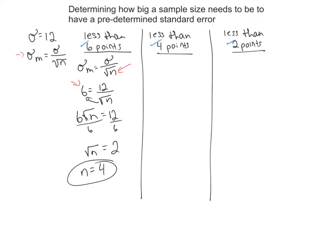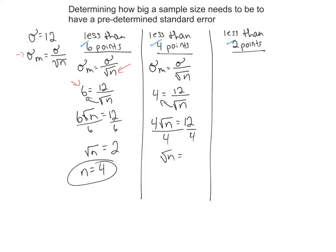Let's say we want an even smaller standard error. Same equation: standard error equals standard deviation divided by the square root of n. This time we want our standard error to be 4, still using a standard deviation of 12. Bring the square root of n over: 4 times the square root of n equals 12. Divide by 4 — square root of n equals 3. Squaring both sides gives us n equals 9.